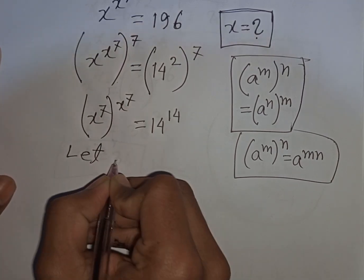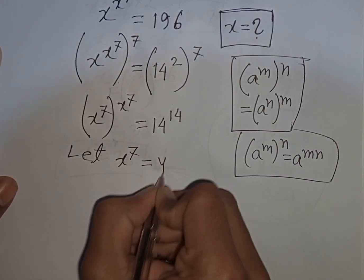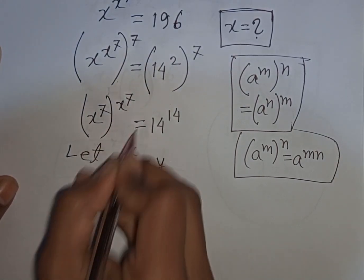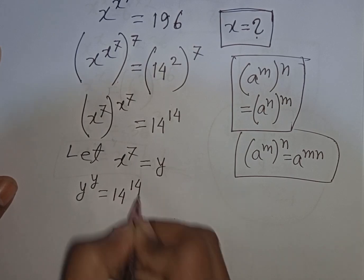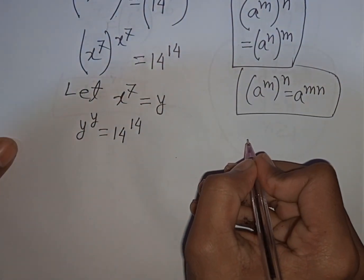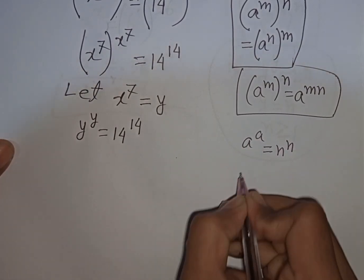So let x^7 be substituted by y. Our equation will be y^y equals 14^14. Now according to this rule, if a^a equals n^n, then a equals n where n is greater than or equal to 1.